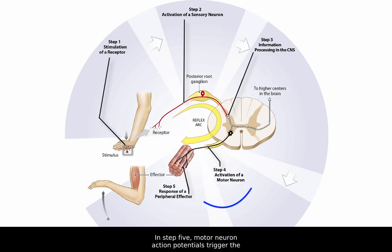In step 5, motor neuron action potentials trigger the release of neurotransmitters, leading to the response of a peripheral effector. Here we see the signal branching to act on several skeletal muscle fibers. These muscle fibers located in your arm contract to withdraw your hand from the painful stimulus.